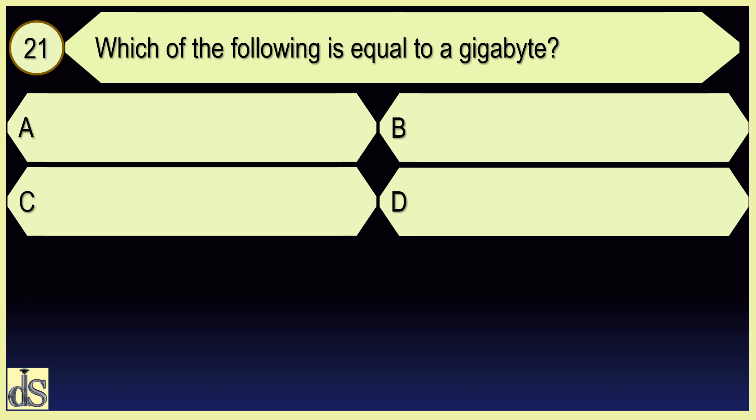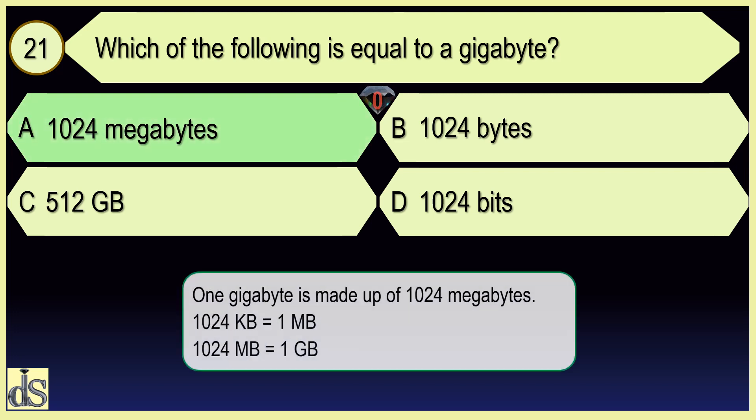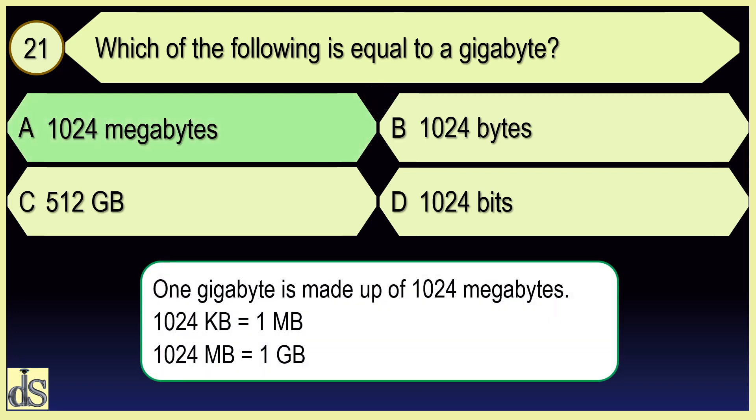Which of the following is equal to a gigabyte? 1024 megabytes.